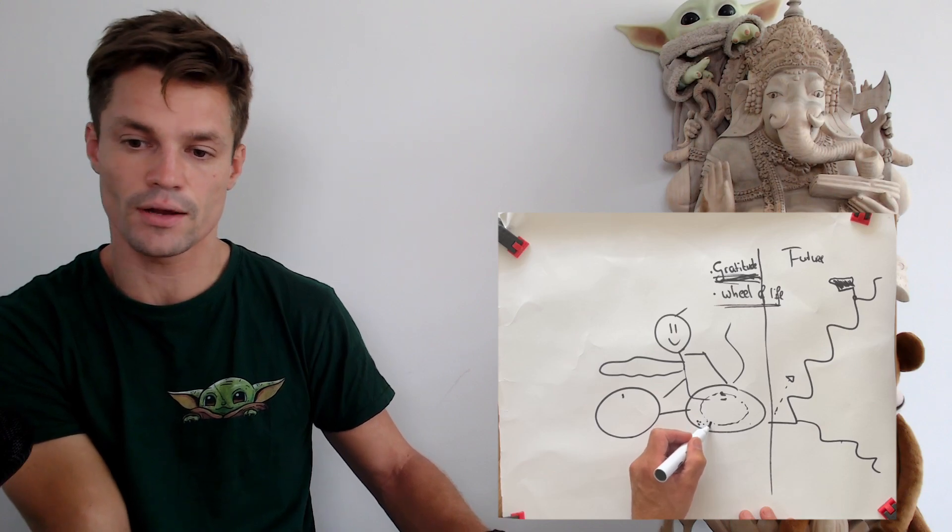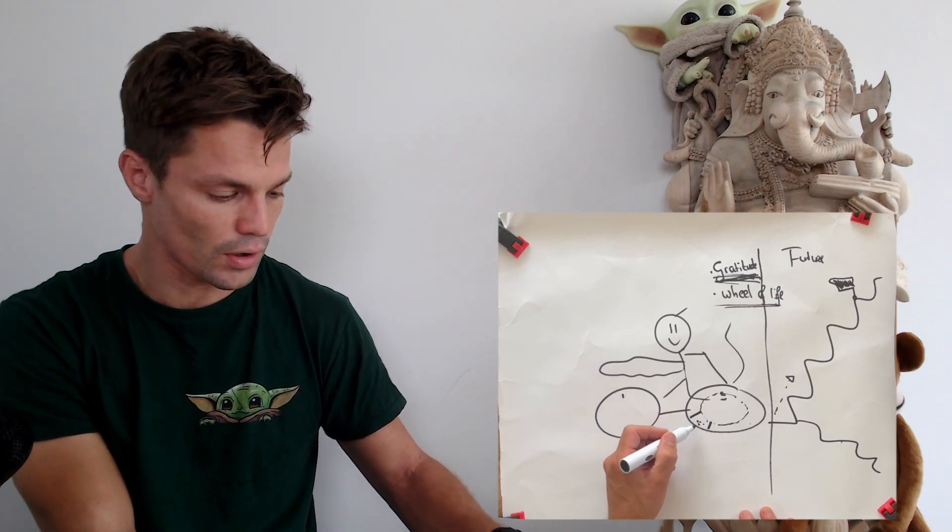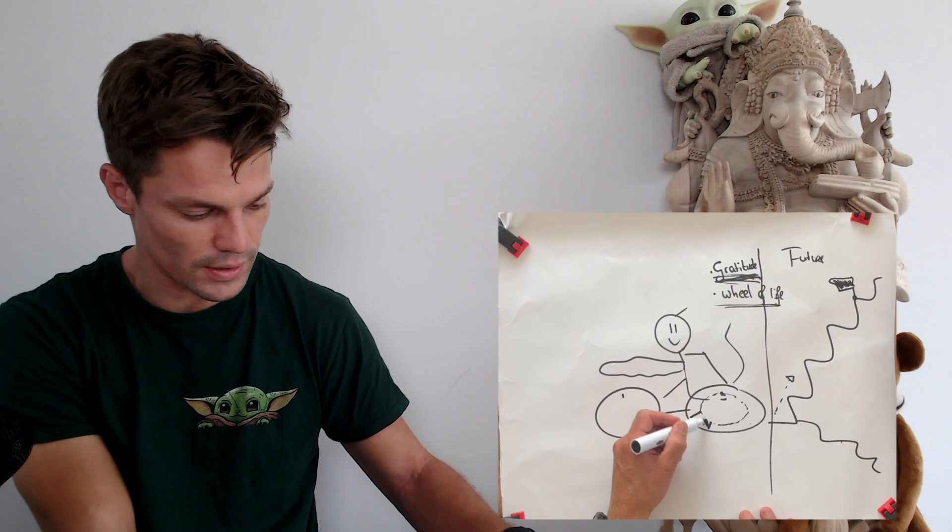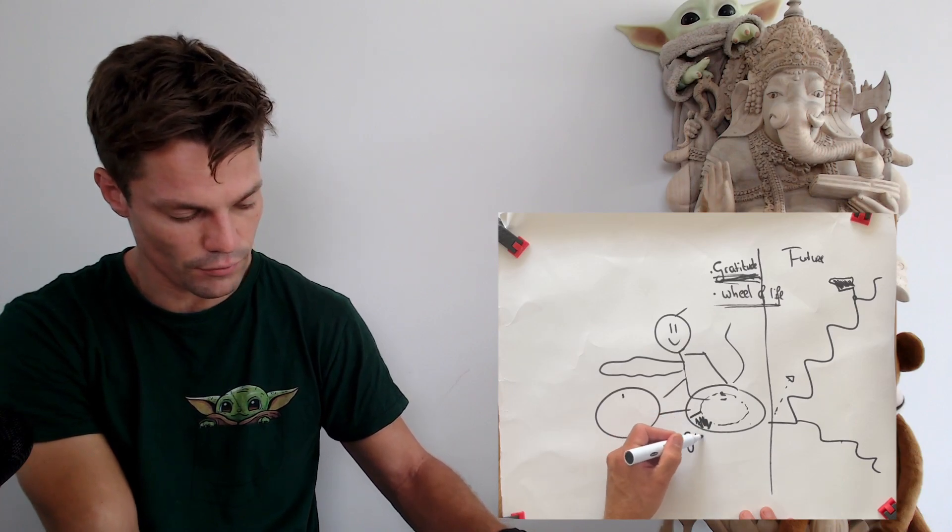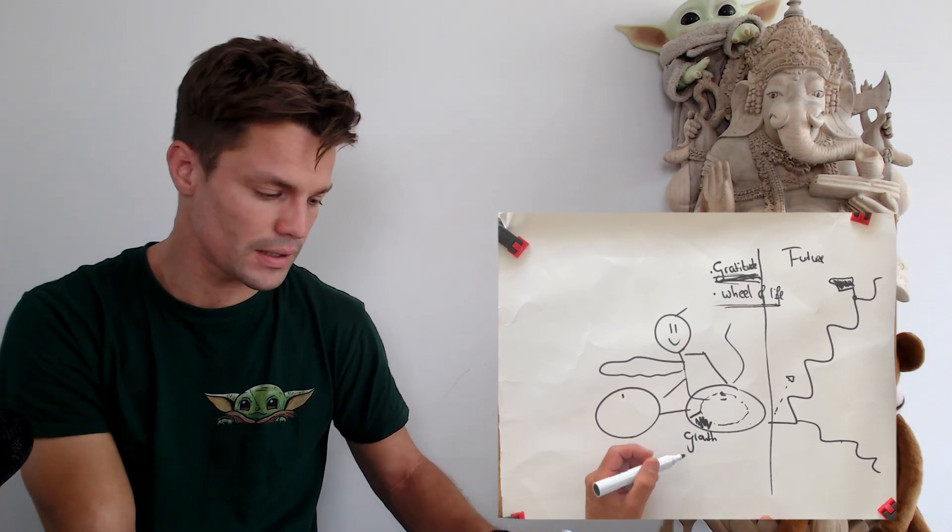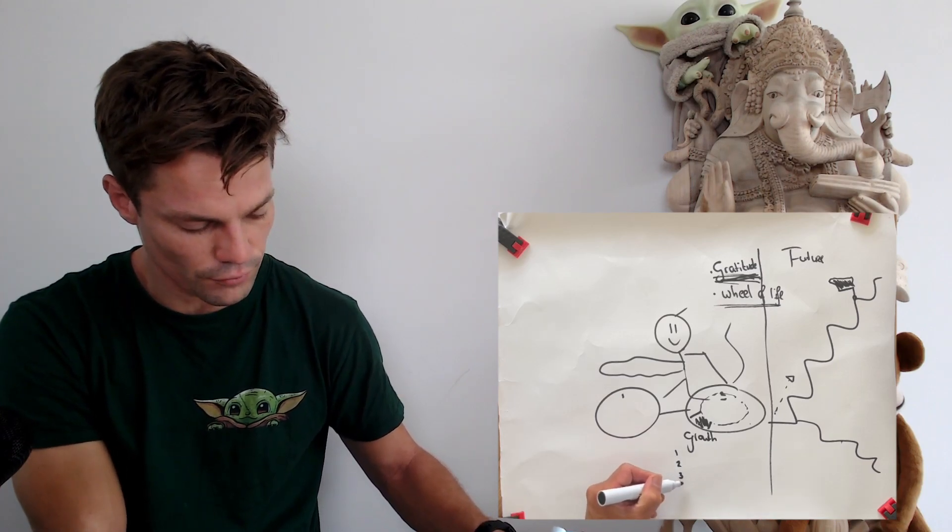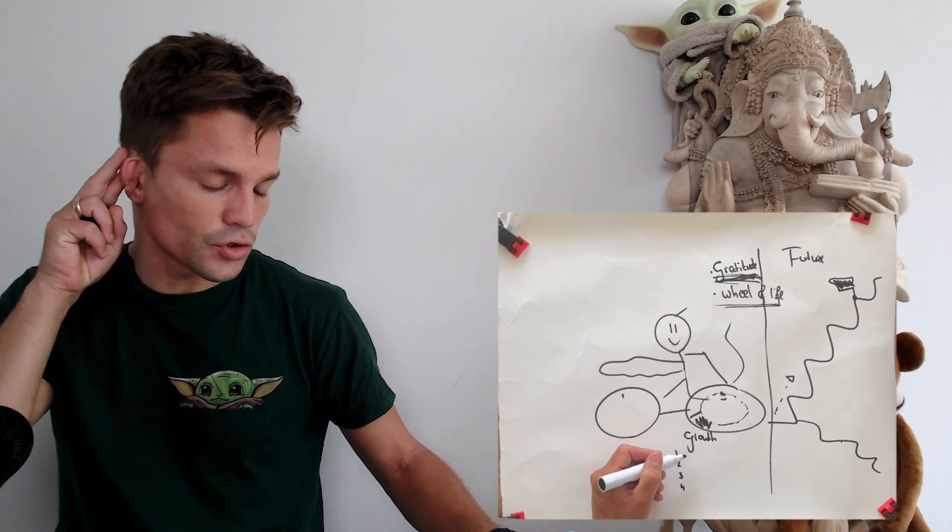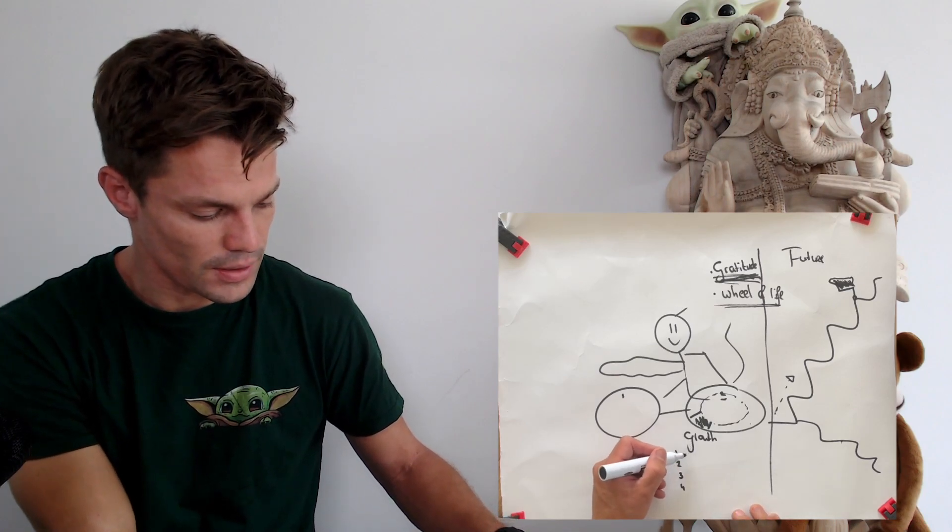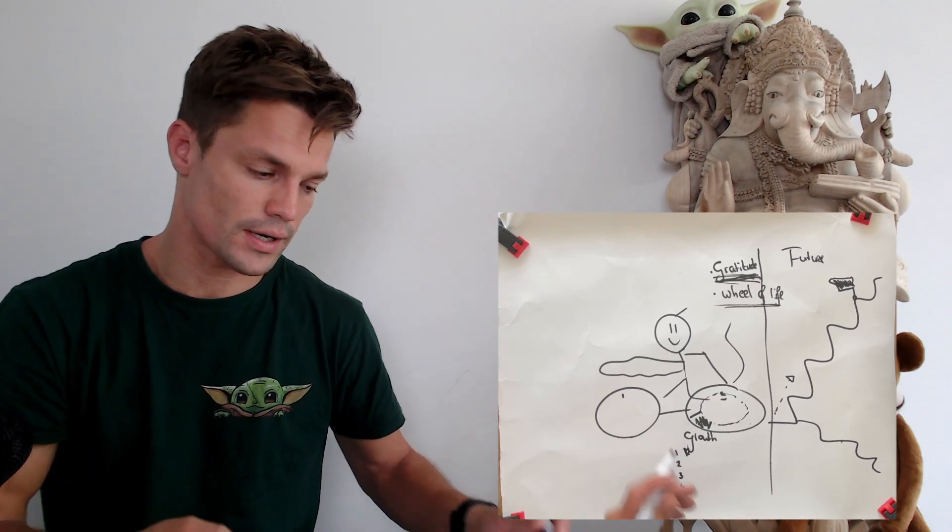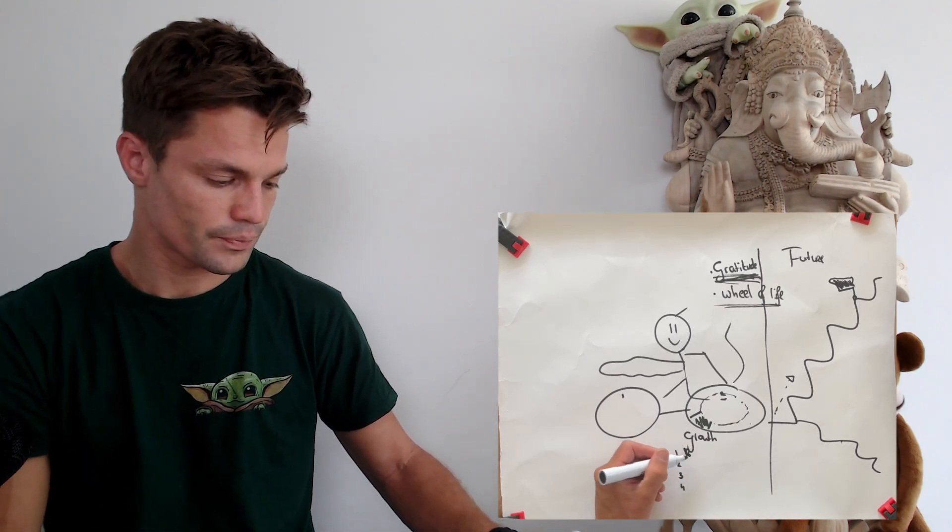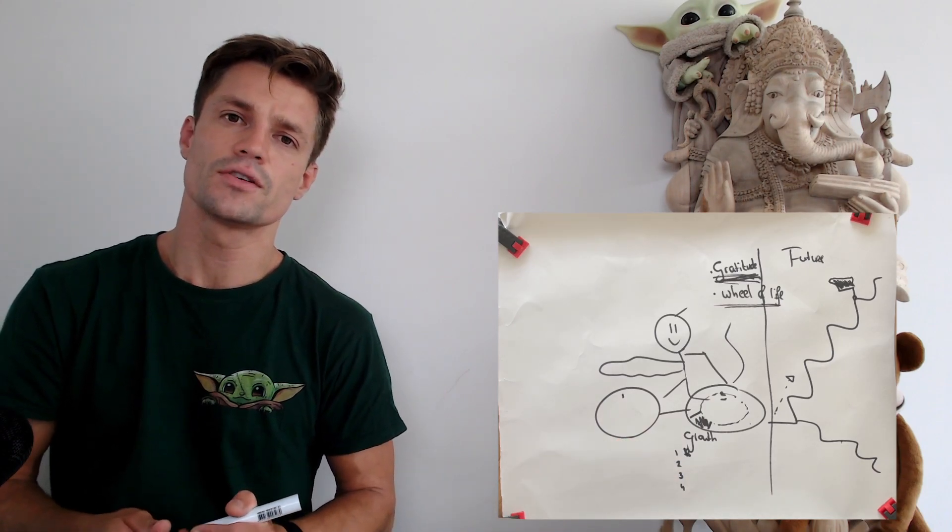Later, drop in these categories. Let's say for example growth and learning. Zoom in on this one. Within one minute, drop down the first things you can think of that you want to grow in. For me this is a reanimation course, Brazilian jiu-jitsu, and getting my motor license.